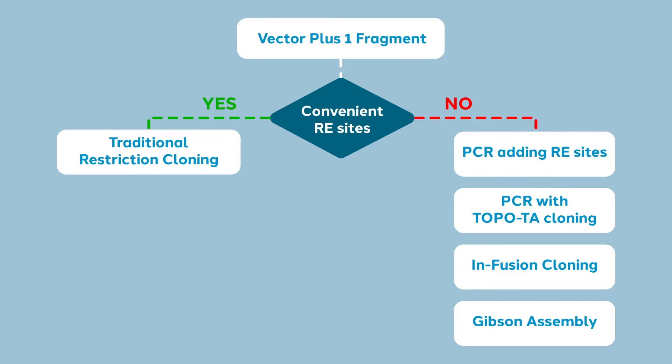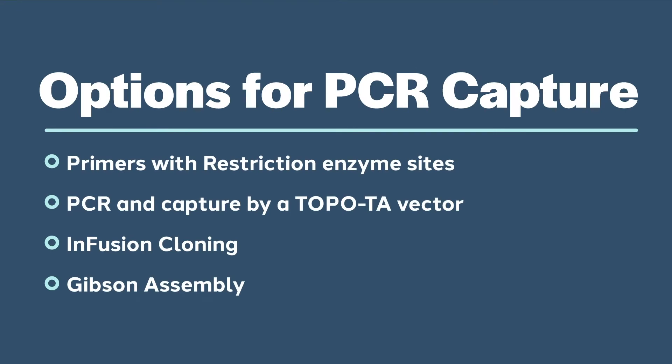If there are no convenient compatible restriction sites for a simple subcloning approach, then you need to consider a PCR-based strategy for your cloning. The costs and time of PCR are comparable. The question then becomes how will you capture your PCR product? Options for PCR capture are listed here. All of these choices require the use of high fidelity polymerase and complete sequence verification of your cloned product. Your choice between options 1 and 2 will probably be situational. Do you need to clone your PCR fragment into a specific vector?